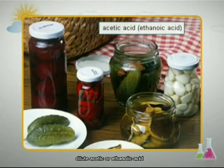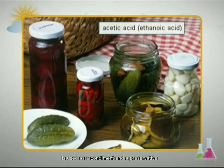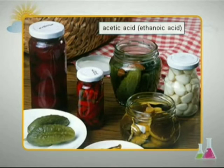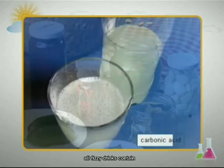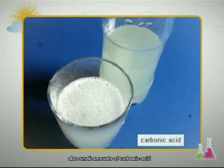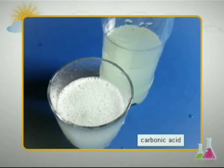Glacial acetic or ethanoic acid is used as a condiment and preservative — for example, in pickling vegetables and mushrooms. All fizzy drinks contain, apart from dissolved carbon dioxide, also small amounts of carbonic acid.